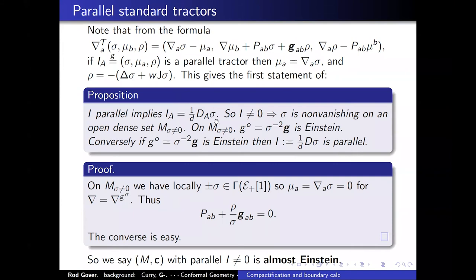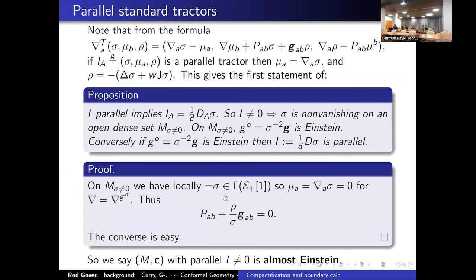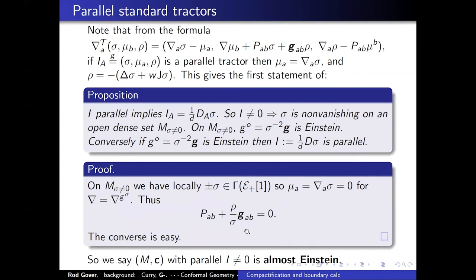When you have a parallel tractor, the sigma in the top slot is non-vanishing on an open dense set, and moreover on the set where sigma is non-vanishing, the scale that sigma determines gives you an Einstein metric. Conversely, if you have an Einstein metric, then the corresponding scale sigma, acted on by Thomas D, gives a parallel tractor. The proof is trivial: you use the explicit formula, and when you work in the scale of the density sigma, the Levi-Civita connection preserves sigma. If the tractor is parallel, mu is the derivative of sigma; the second derivatives vanish; and you're left with exactly the Einstein condition — the vacuum Einstein equations with a cosmological constant.